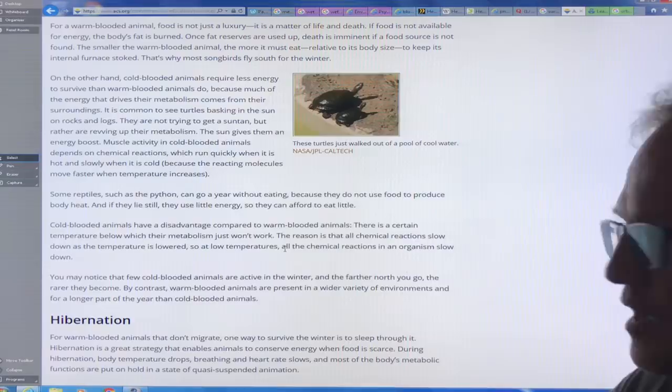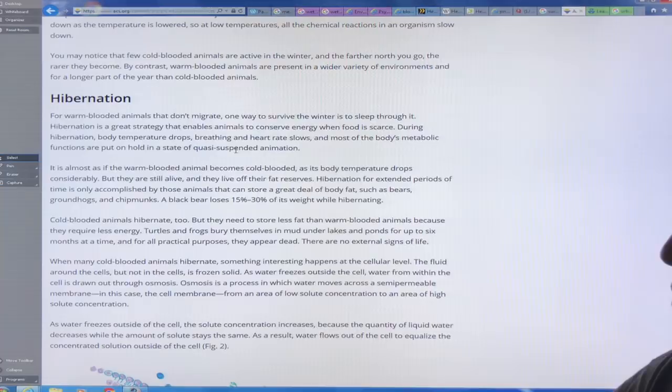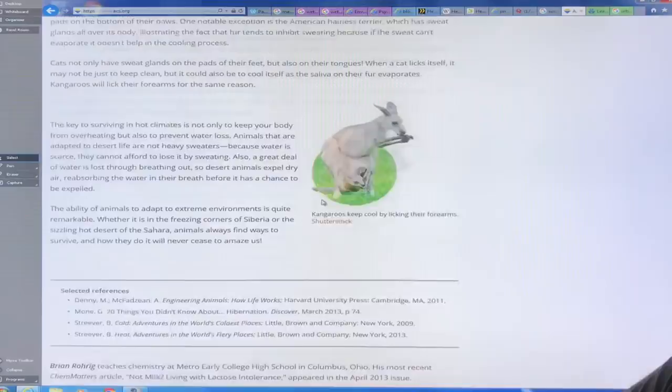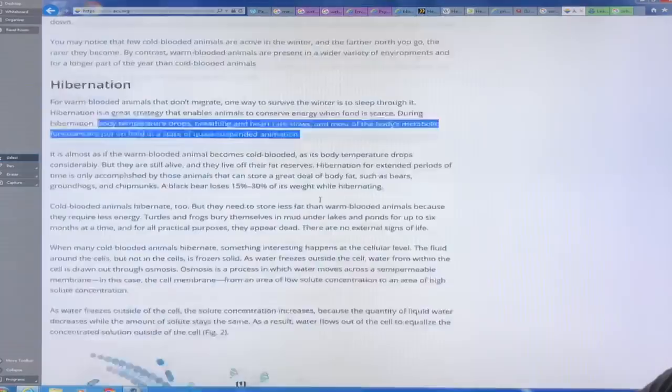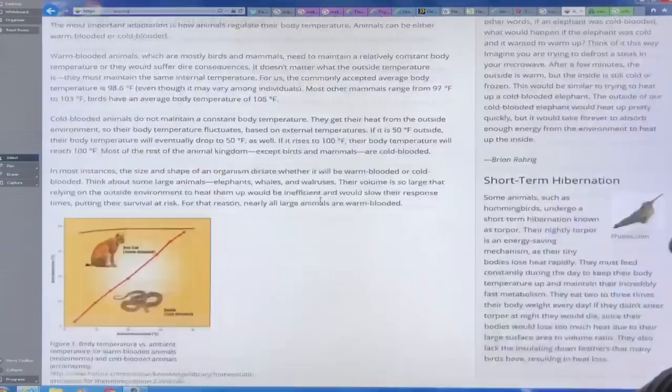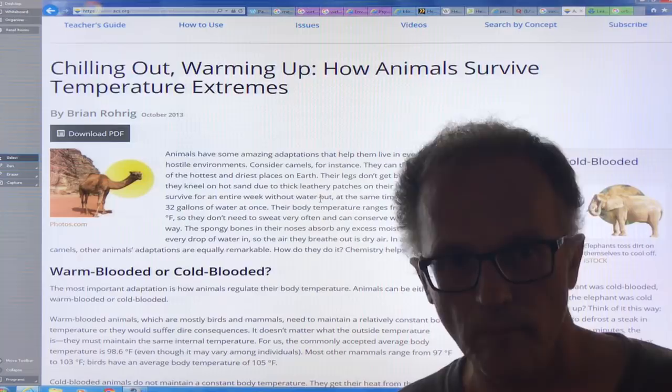Some mammals of course hibernate. They go into this state where their body temperature drops, breathing and heart rate slows. They're basically dormant. They're in this quasi suspended animation. There's lots of stuff here about mammal adaptation, birds, et cetera. The key thing is core body temperature. Our core body temperature is 35. Our skin temperature is 35. Our core body temperature is 37. Therefore, how we survive in an environment depends on that. That's a key factor. Thanks for listening.